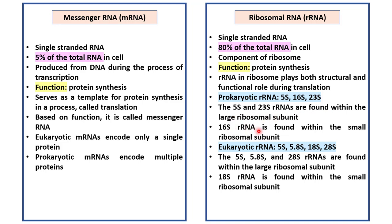While the 16S rRNA is located in the small ribosomal subunit. Eukaryotes have four rRNAs: 5S, 5.8S, 18S and 28S. The 5S, 5.8S and 28S rRNAs are found within the large ribosomal subunit, while the 18S rRNA is located in the small ribosomal subunit.